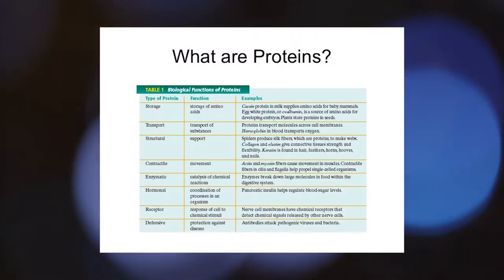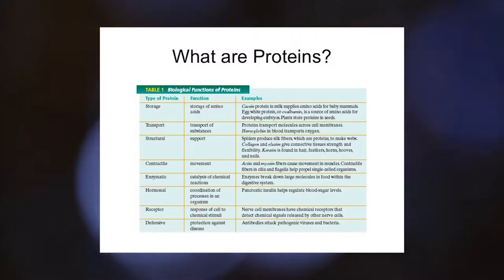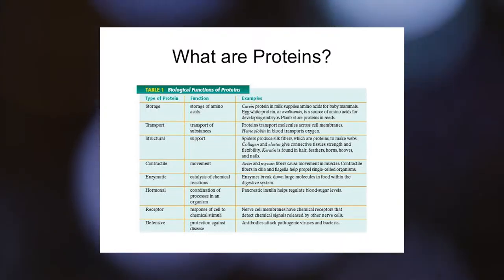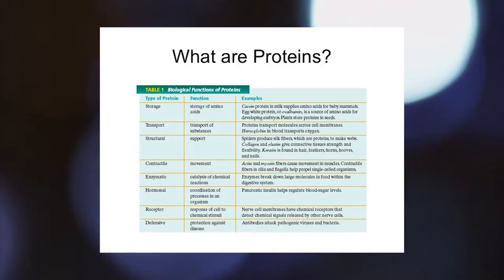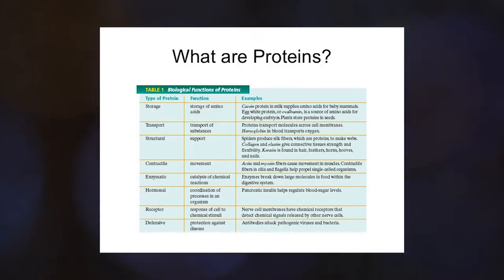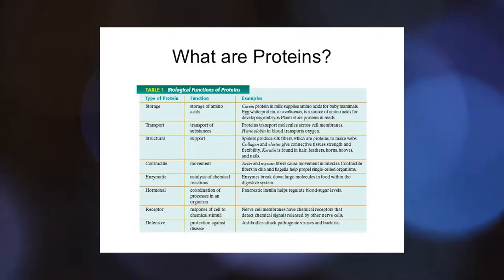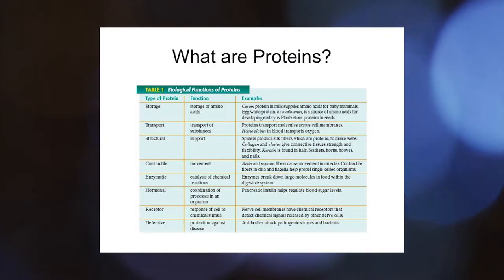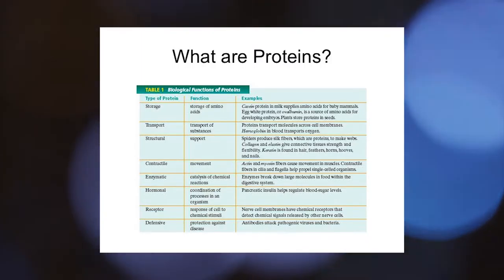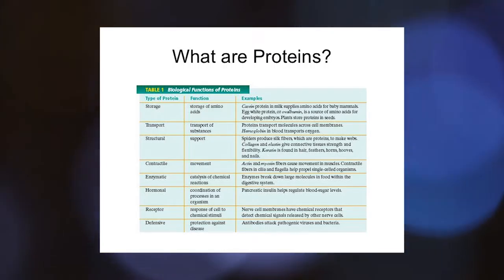What do proteins do? The answer is really easy: proteins do everything. I have a whole bunch of examples. One is a transport protein — that allows the transport of a biomolecule across the membrane that couldn't normally get across without the help of the protein. Another example of a transport molecule is hemoglobin — it transports oxygen in our bloodstream inside our red blood cells.